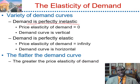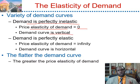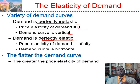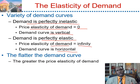Demand is perfectly inelastic when the price elasticity of demand is equal to 0. In this case, demand is going to be vertical, meaning the percentage change in the quantity is exactly equal to 0 for any change in the price. Demand is perfectly elastic when the price elasticity of demand is infinity. In this case, demand is going to be horizontal, meaning the percentage change of the price is equal to 0 for any change in the quantity.